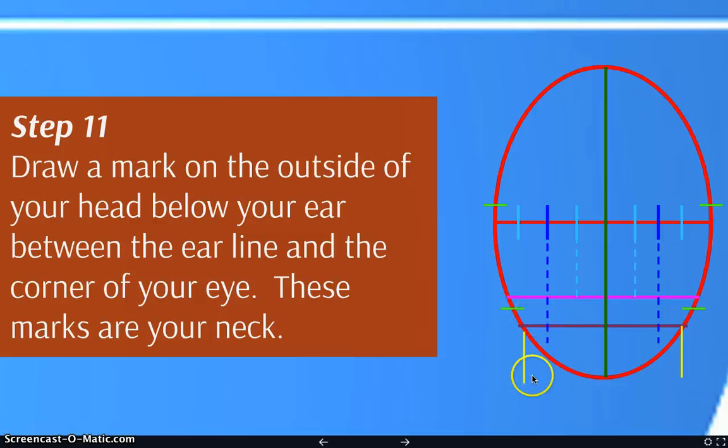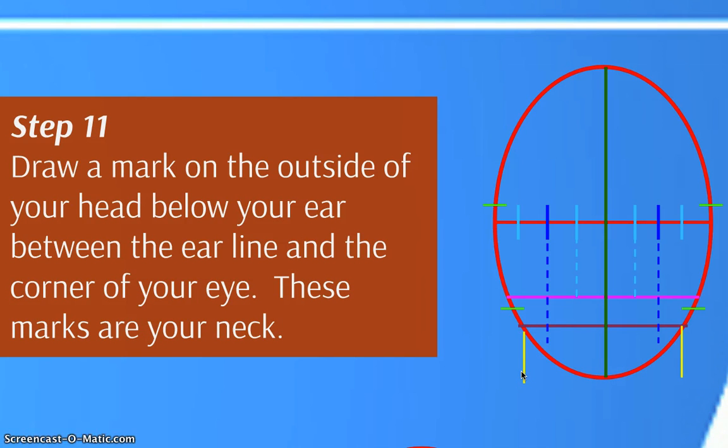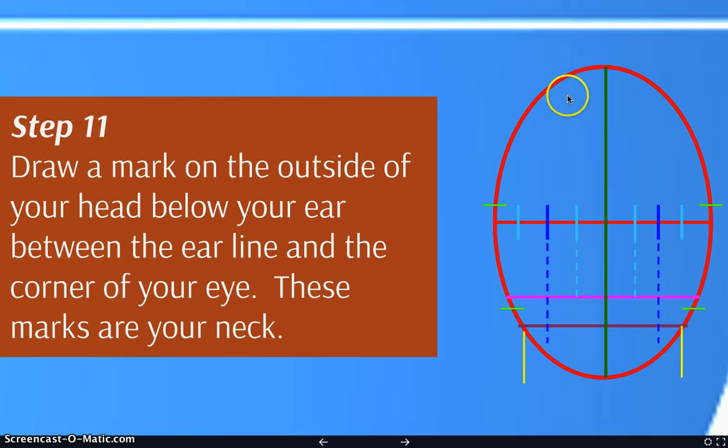Alright. Last but not least is, or second to last, is your neckline. Your neck is also much thicker than you think it is. It's thickness is partly due to the fact that your brain, which is up here, has to communicate and get everything down to your body. So, there's got to be a lot of space for all of those things that the brain needs to control to talk to. Okay. So, the line starts directly below your mouth line on the edge of your face on both sides.